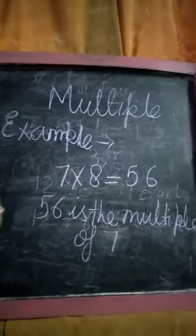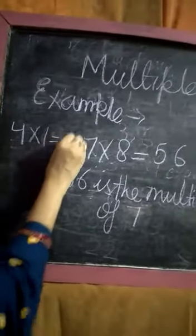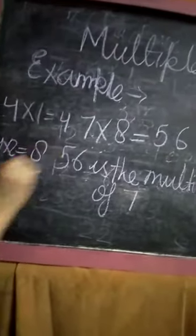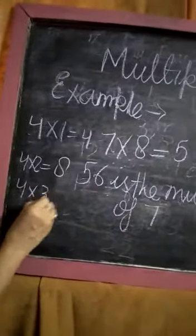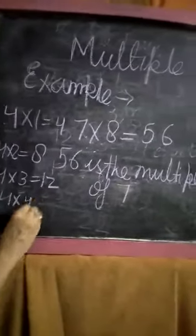Again, we take the 4 table. 4 into 1 equals 4, 4 into 2 equals 8, 4 into 3 equals 12, 4 into 4 equals 16.